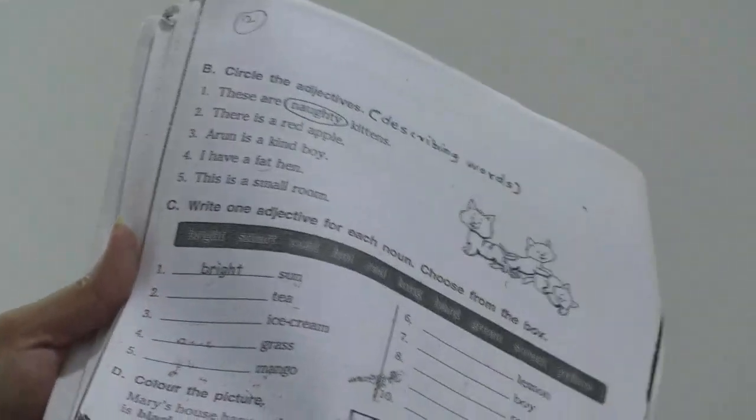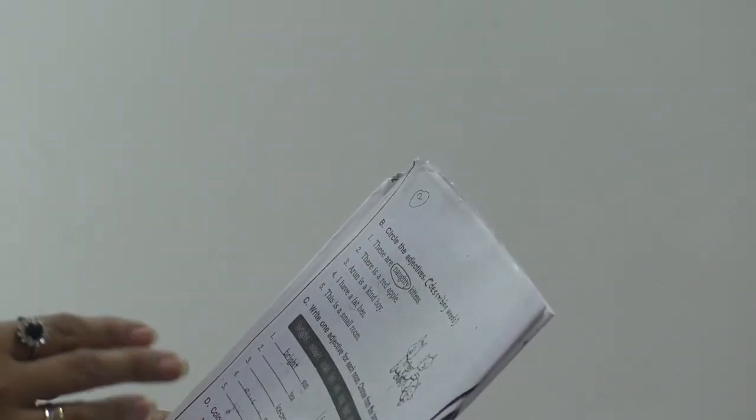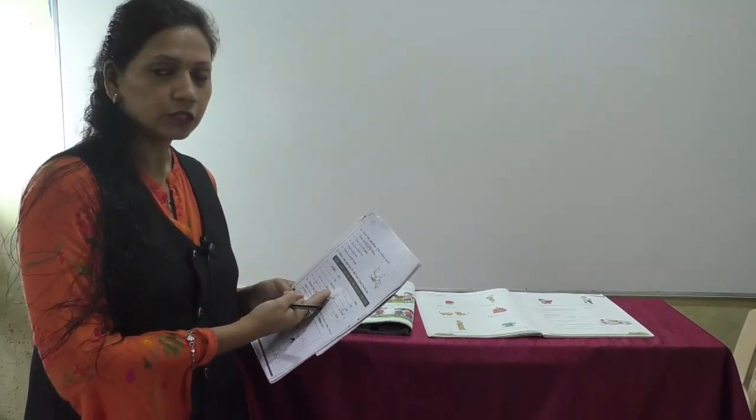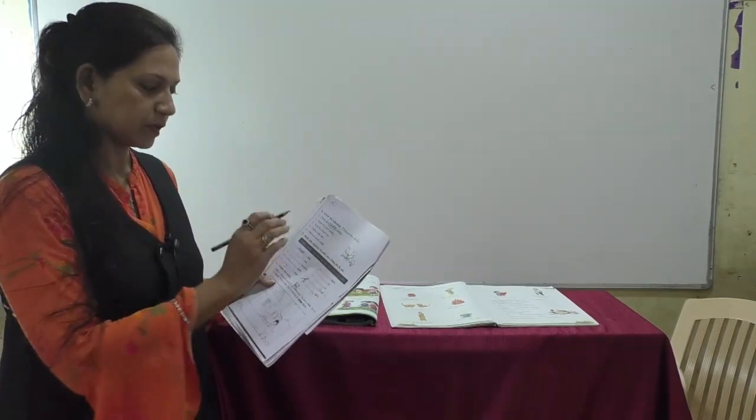After that you have to take out your worksheet. This worksheet is based on adjectives as we are learning adjectives. What are adjectives? Adjectives are the words that describe or tell more information about nouns. What are nouns? People, places, animals and things. These are the nouns. What do adjectives do? Adjectives tell more about the noun. Let's start.